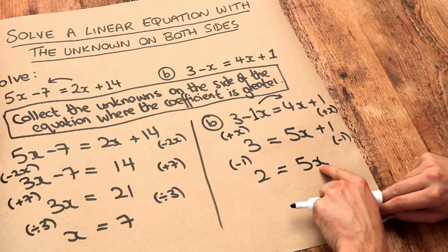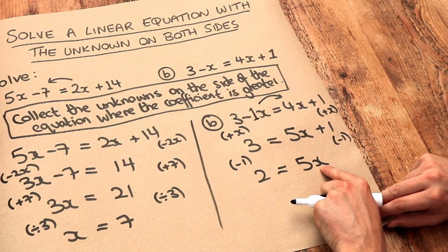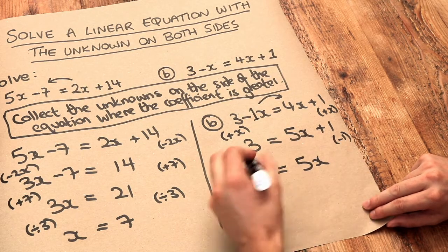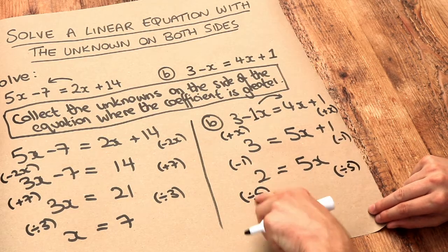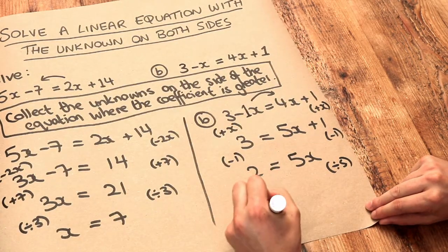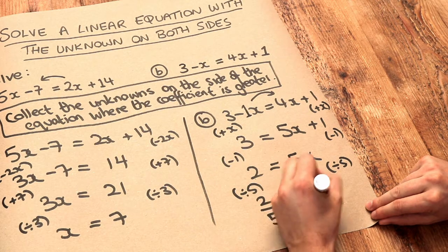And then we want to get rid of that multiplied by 5 in front of the X because it's 5 lots of X. So we divide both sides by 5. And 2 divided by 5 is 2 fifths. It's absolutely fine to leave your answer as a fraction in algebra.